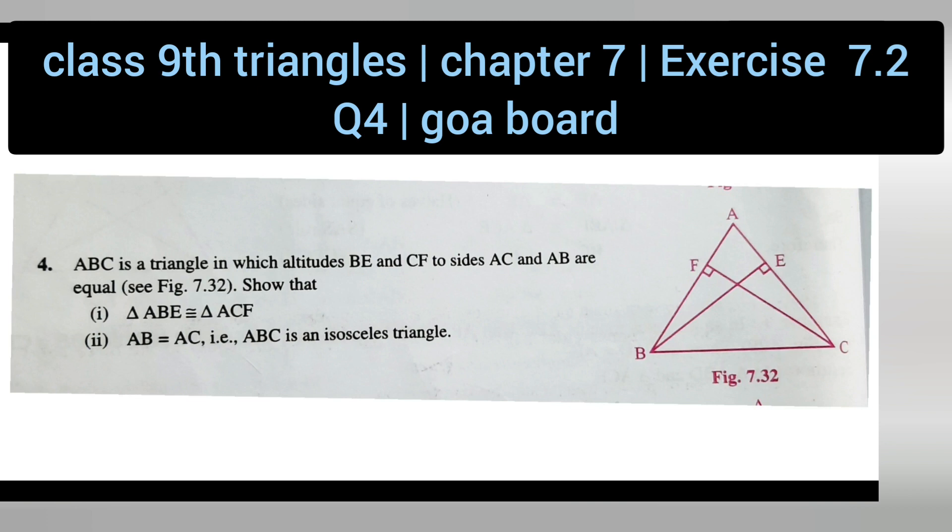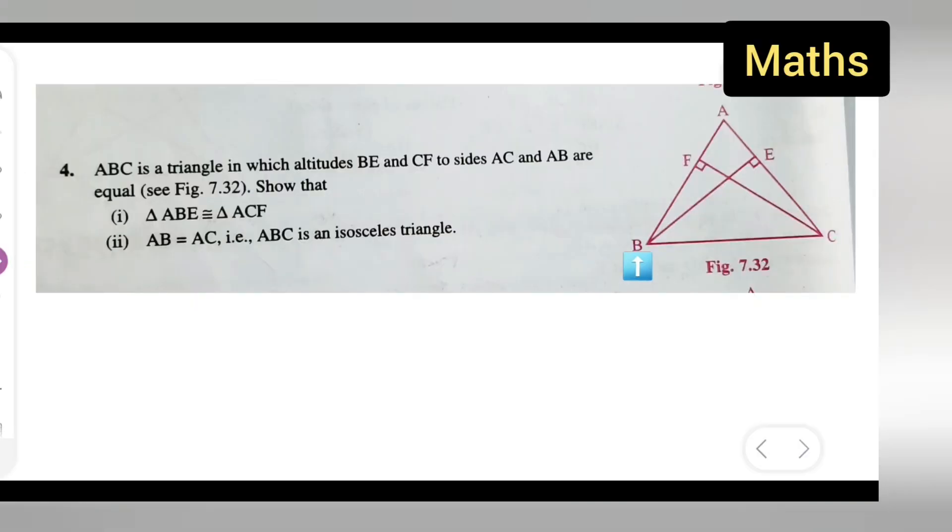So first y'all can take down the question. ABC is a triangle in which altitudes BE and CF to sides AC and AB are equal.